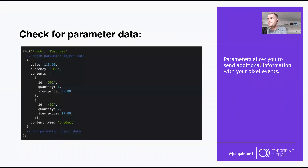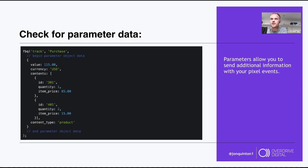You can also pass through data in event parameters. When someone purchases, you can pass information like revenue, sale total, discount total, quantity, product name, and product ID. All of these are really useful when building out audiences on Facebook and understanding who you want to target.